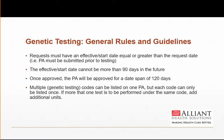All requests must have an effective or start date equal to or greater than the request date, meaning the PA must be submitted prior to the test being complete. The only exception is if the member was awarded retro eligibility. The effective or start date cannot be more than 90 days in the future, and once the PA has been approved, it will be approved for a date span of 120 days. Multiple codes can be listed on the same PA, but each code can only be listed once. If more than one test is to be completed under the same CPT code, the provider would ask for additional units for that code.